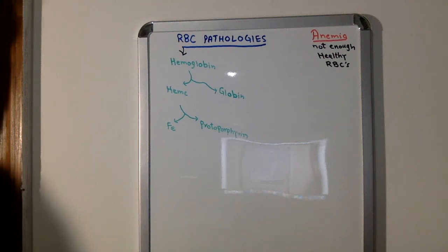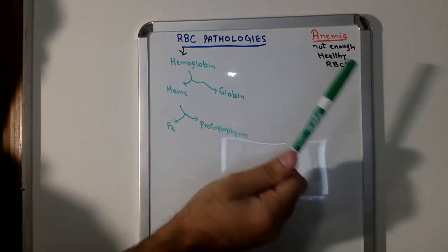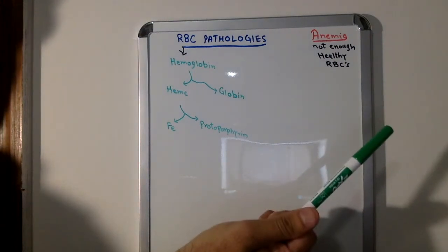Alright everybody, today we'll be talking about RBC pathologies. The most important thing is anemia. And what is anemia? Anemia is not enough healthy RBC in someone's blood.